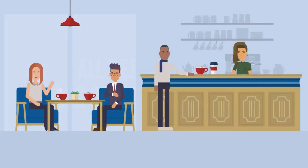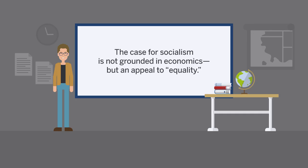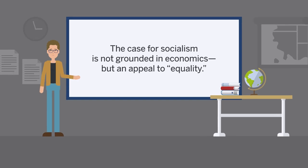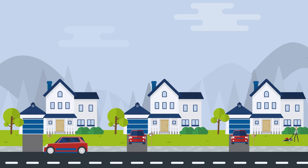Economics explains why freedom makes society richer and more prosperous. The case for socialism is not grounded in economics, but an appeal to equality. The result is to make people equally poor.